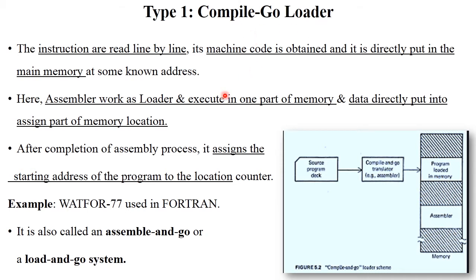In the compile and go loader, instructions are read line by line, machine code is generated for each line, and directly put into main memory at a known address. There is no separate loader — the assembler works as both a translator and a loader. The assembler translates the source program and directly places it into memory, with no separate loader component involved.